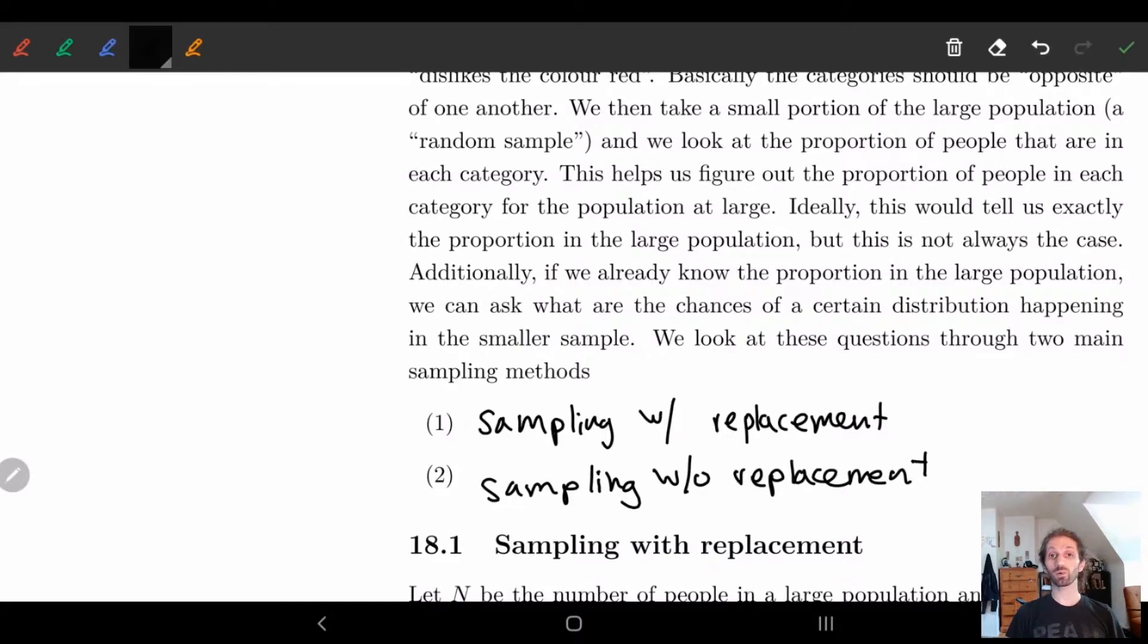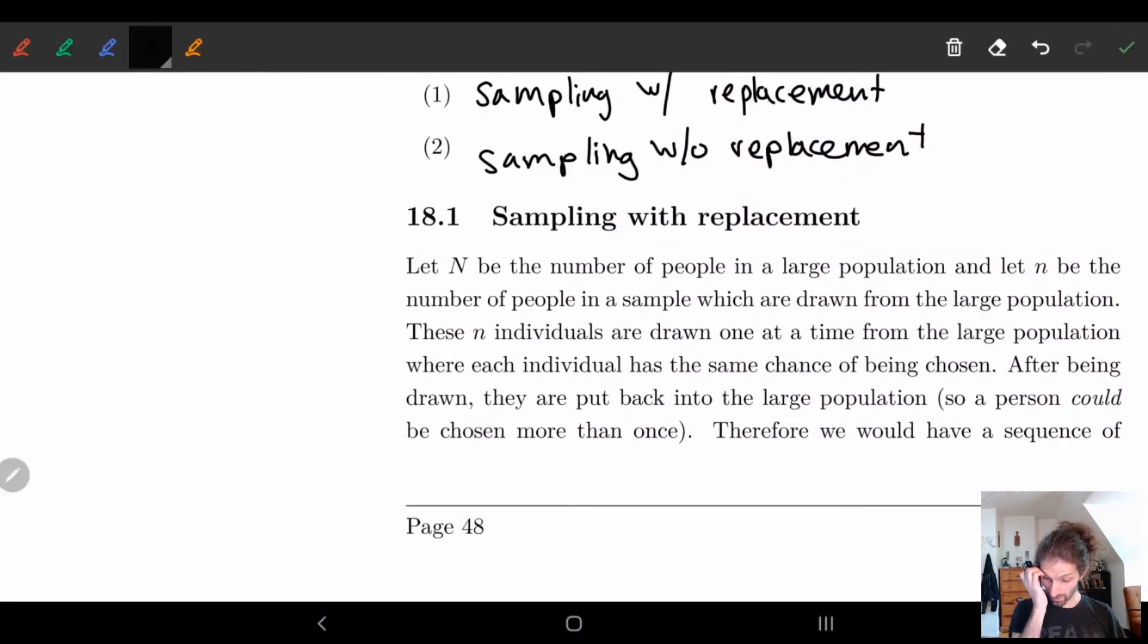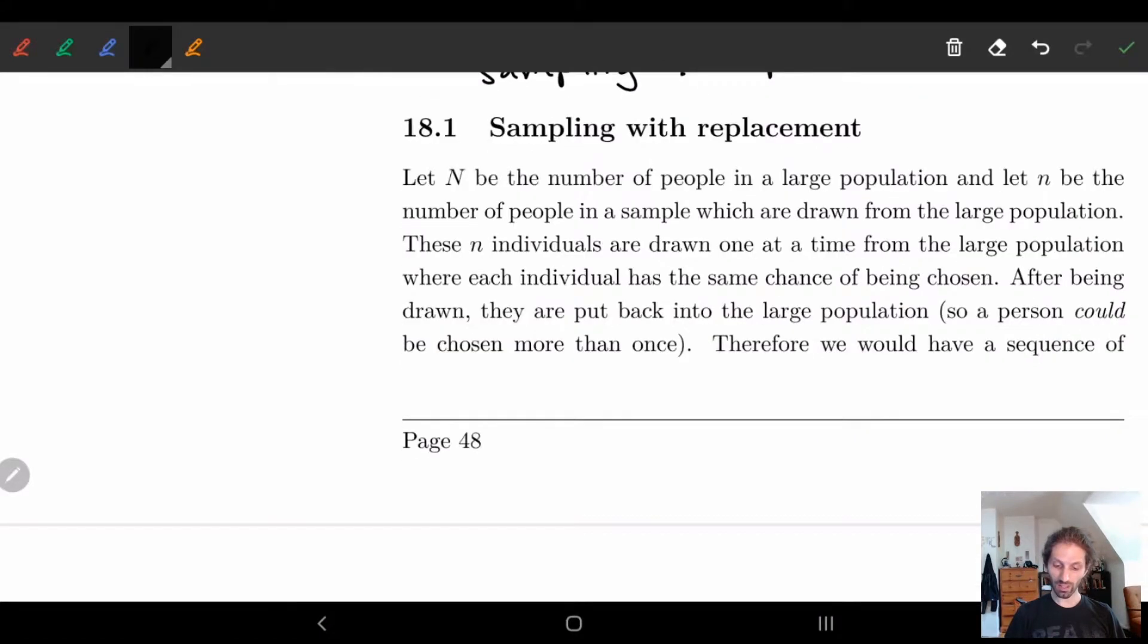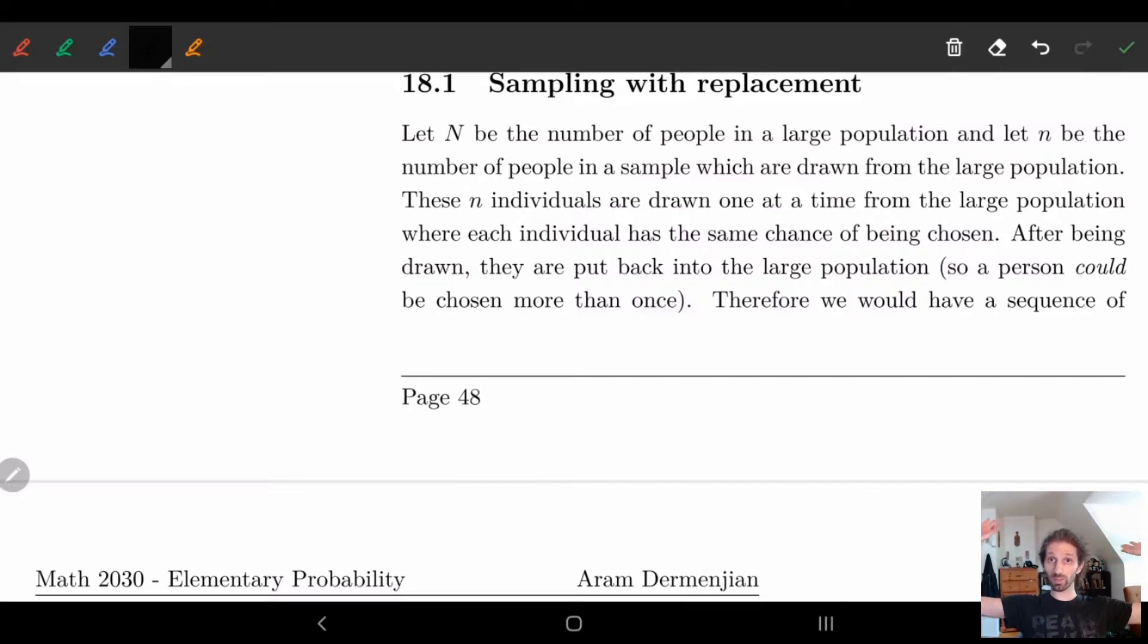So let's look at sampling with replacement in this lecture, in this video, and then go from there. So sampling with replacement, what we have here is we take a population of N people. So think Toronto, we have N number of people. So N number of people who live in Toronto, some big population. And we take some small number of people within this population which are drawn at random.